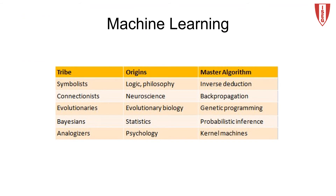We may identify five tribes: Symbolists, Connectionists, Evolutionaries, Bayesians, and Analogizers, with different origins and influences including philosophy, neuroscience, evolutionary biology, statistics, and psychology.